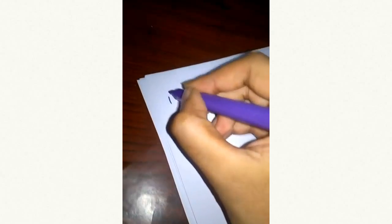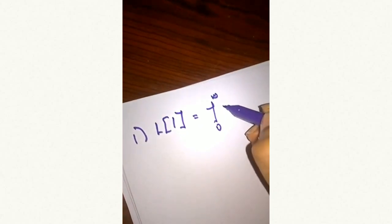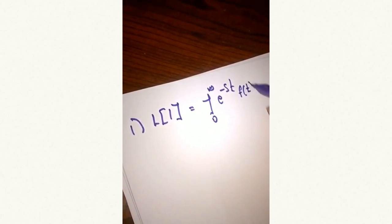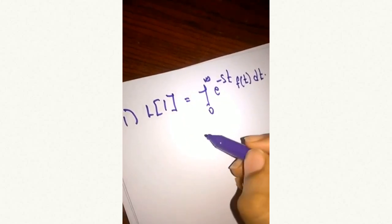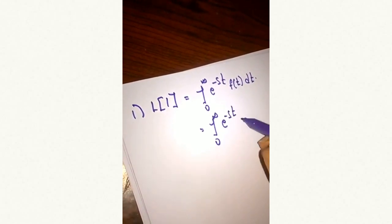Here we take Laplace of 1 using the formula integral 0 to infinity e power minus st f dt. We substitute the f value 1 into dt.